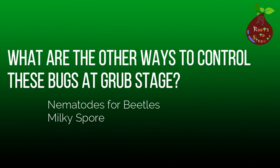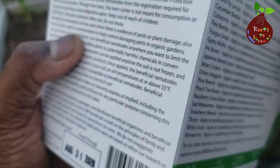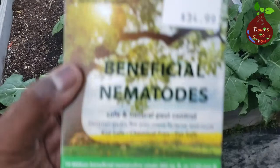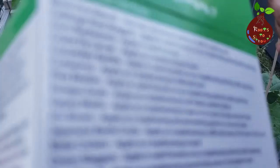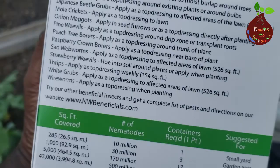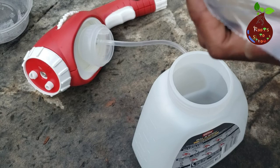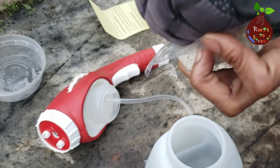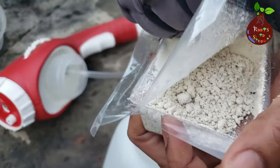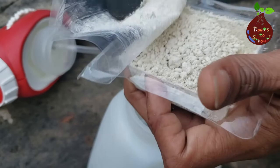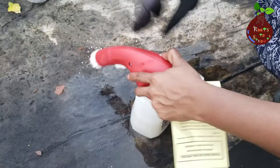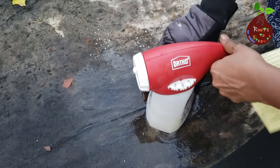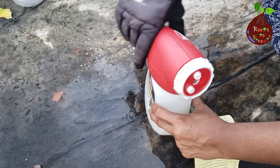Let's look at other options to control grubs at an early stage. Number one is nematodes and number two is milky spore. Beneficial nematodes are microscopic parasitic roundworms — a kind of bacteria — that seek out grubs in the soil. They do not harm humans, plants, beneficial insects, or earthworms. Nematodes should be applied in the morning or evening because the best soil temperature range is between 40 to 80 degrees Fahrenheit; anything above that and the nematodes will die.